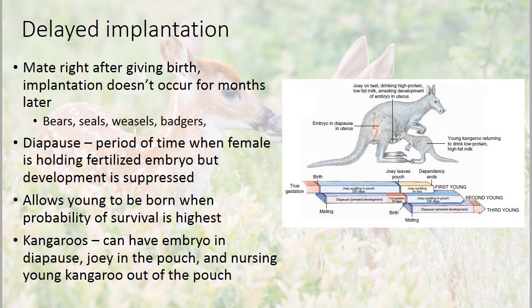What delayed implantation does is allow the young to be born when the probability of survival is highest. For example, if they breed in the spring but the gestation time would have them giving birth in the middle of winter, that's not when survival would be highest. So with delayed implantation, they have their babies when survival is highest.